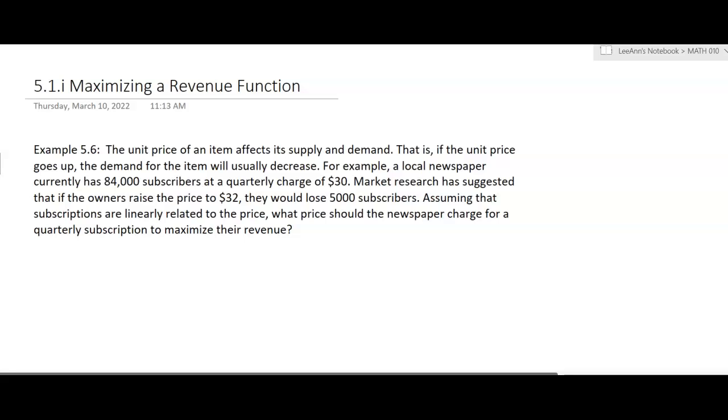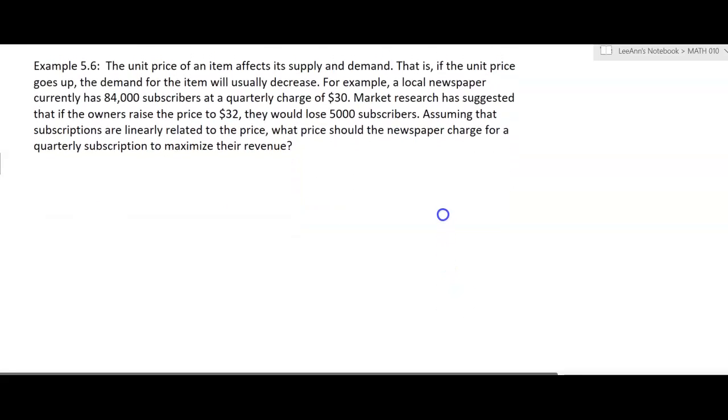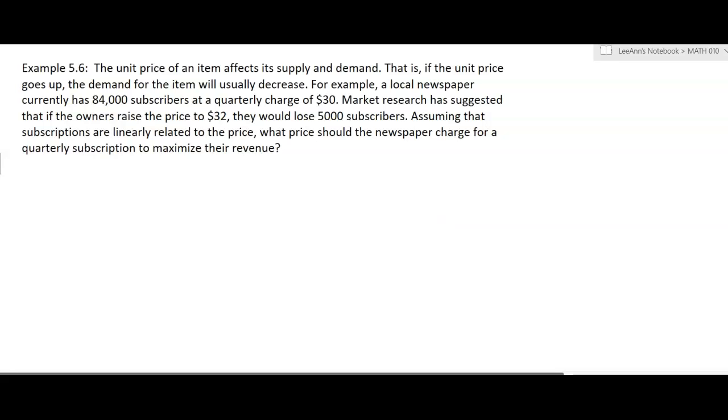Okay, so in this problem we're going to maximize our revenue function. The unit price of an item affects its supply and demand. That is, if the unit price goes up, the demand for the item will usually decrease. If the prices go up, people don't want to buy as much. For example, a local newspaper currently has 84,000 subscribers at a quarterly charge of $30. Market research has suggested that if the owners raise the price to $32, they will lose 5,000 subscribers. But assuming that subscriptions are linearly related to the price, that's going to be important that we recognize that. What price should the newspaper charge for a quarterly subscription to maximize their revenue?